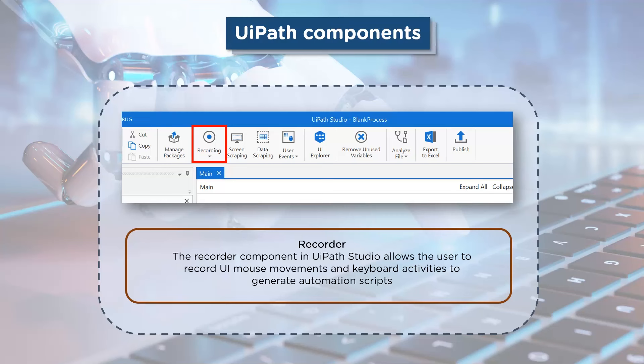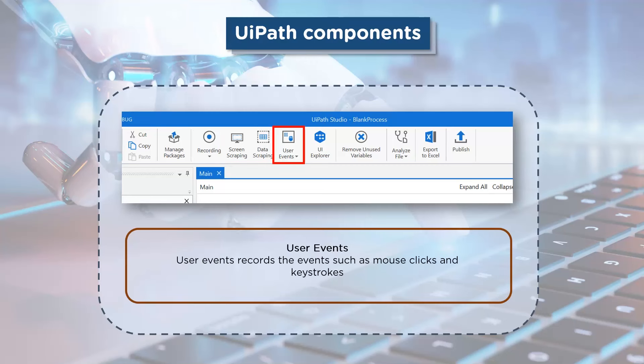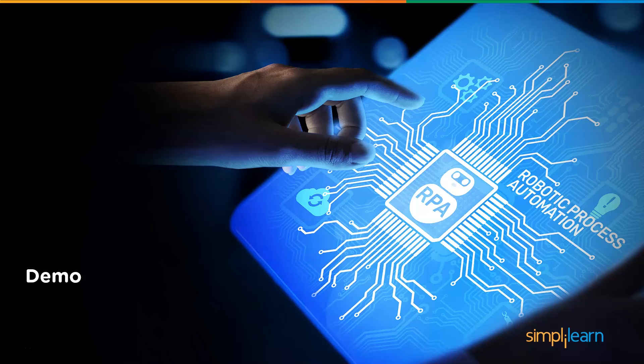Let's understand the UiPath interface briefly. First, we have the Recorder — it allows the user to record all user actions such as navigations and clicks. Next is Scraping, which involves two components: screen scraping (the programmatic collection of visual data) and data scraping (the extraction of structured data from an application). User Events records all mouse clicks and keystrokes given as input. Finally, Variables hold different types of data and can change over time.